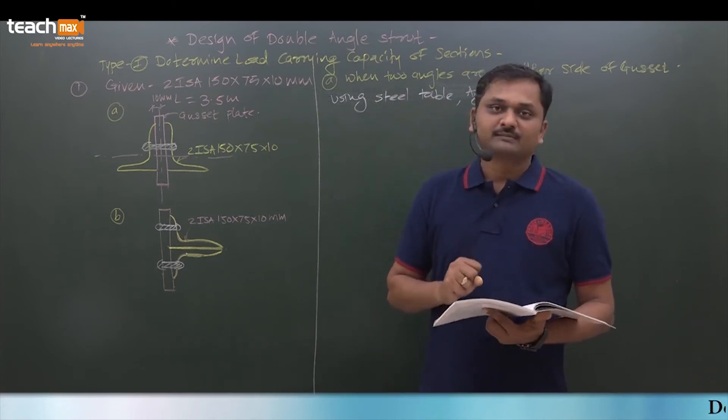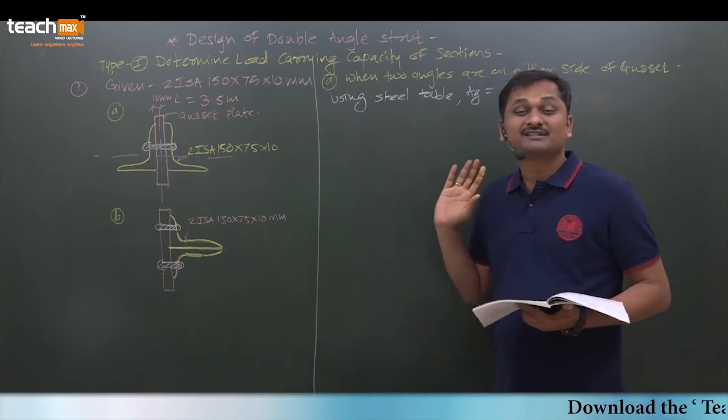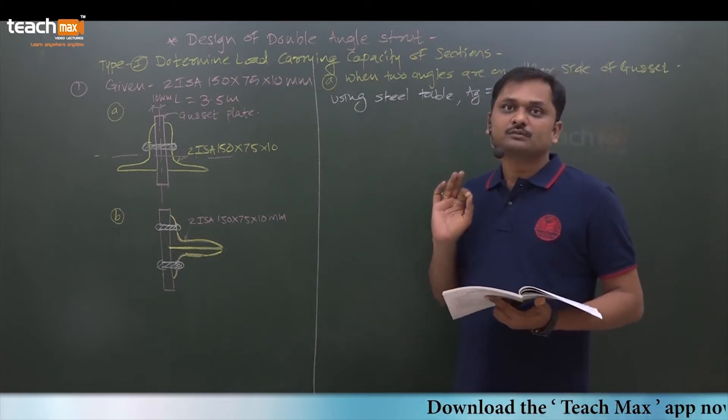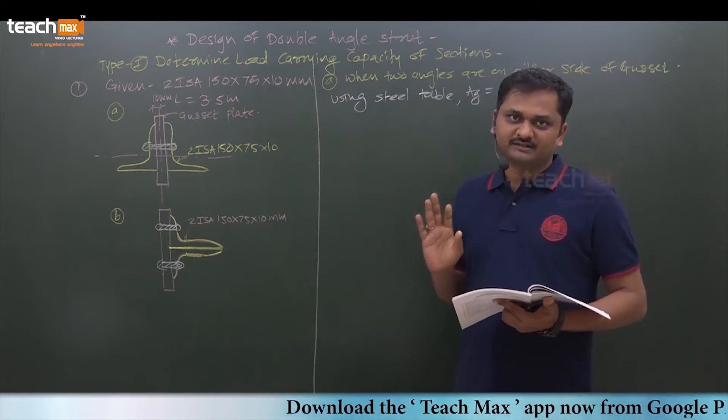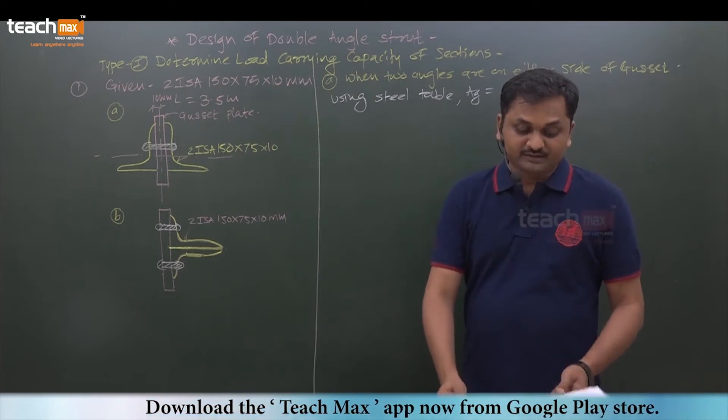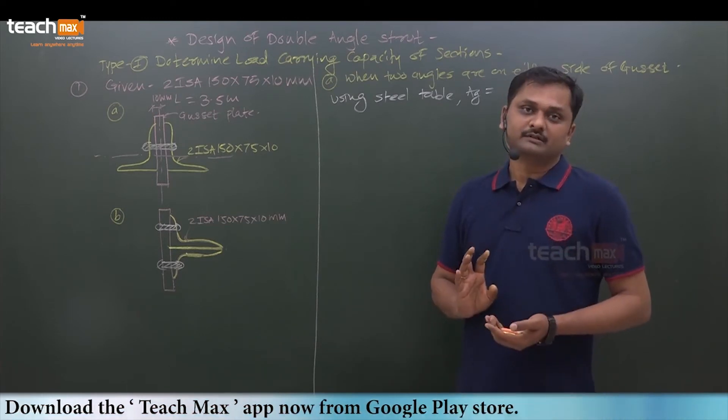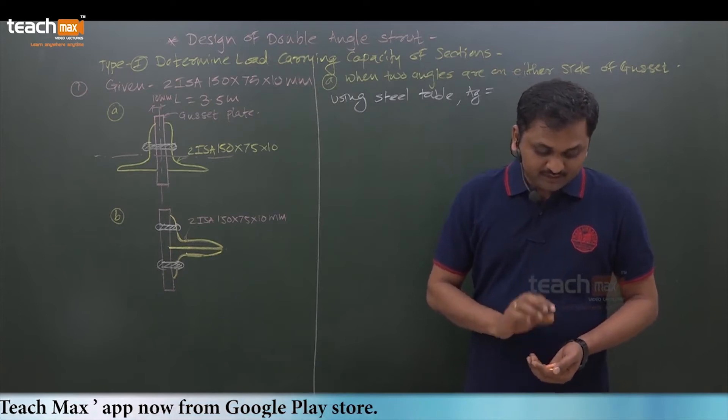So you must be able to write the properties clearly. You have to pick the property clearly from the steel table. So 150 by 75 by 10.